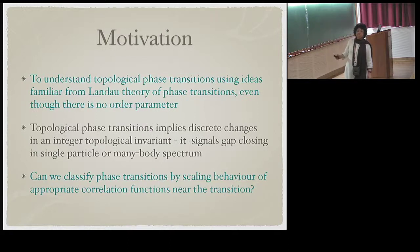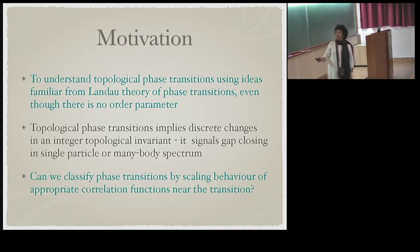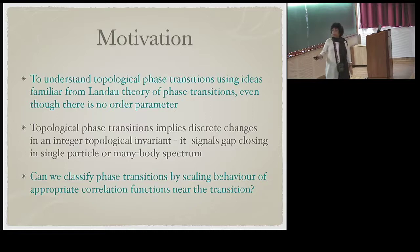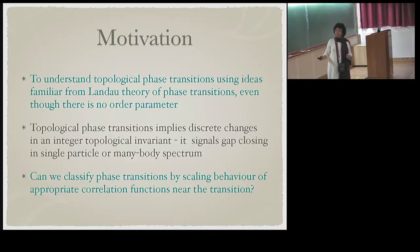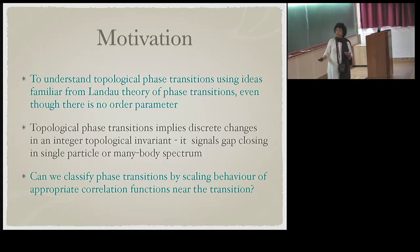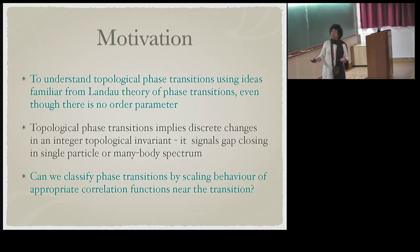Our motivation is to understand topological phase transitions using ideas familiar from Landau theory of phase transitions, even though there is no order parameter. Topological phase transitions imply a discrete change in an integer topological invariant and signal gap closing in the single-particle or many-body spectrum. Our question is: can we classify topological phase transitions by the scaling behavior of appropriate correlation functions near the transition?